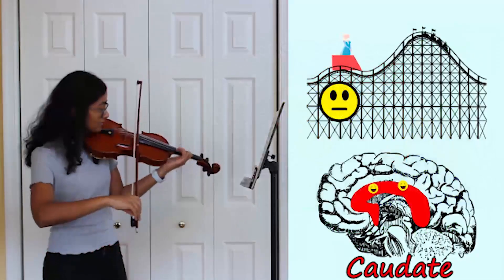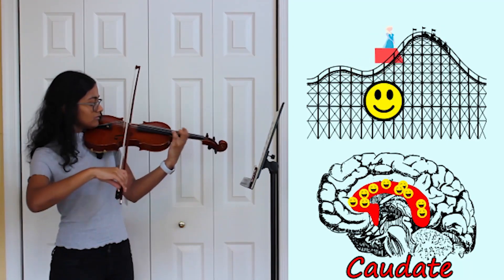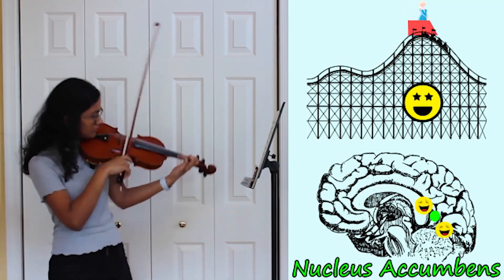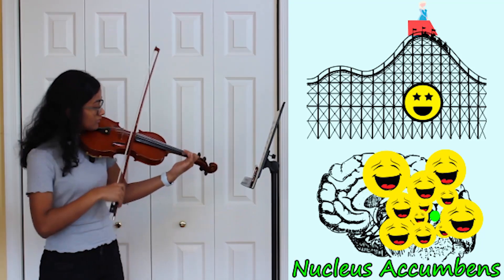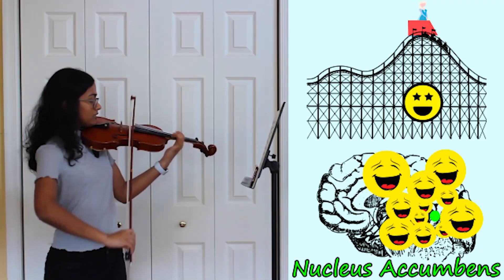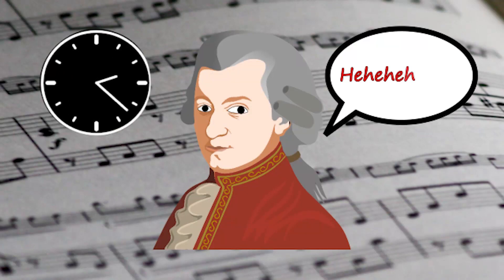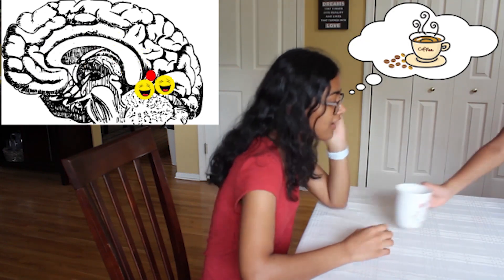As the song is developing, the caudate is filling with dopamine and is priming you with the expectation for a reward at the climax. Finally, when the high note is hit, the nucleus accumbens is flooded with dopamine, and you get goosebumps and chills. Composers know that you're waiting for that climax, so they delay it as much as possible. The longer you wait for it, the greater your desire, and thus the greater the pleasure at the climax.